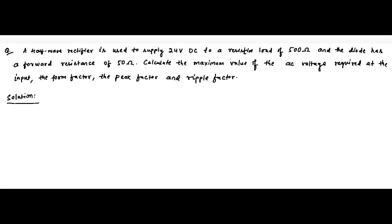Here is another question on half wave rectifier. A half wave rectifier is used to supply 24 volt DC output to a resistive load of 500 ohm — that is the load resistance — and the diode has a forward resistance RF of 50 ohm. We need to calculate the maximum value of AC voltage required at the input, the form factor, the peak factor, and the ripple factor.